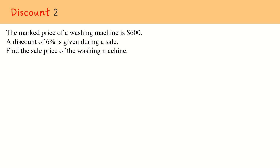For us to answer this question, we need to first know what percentage the sale price actually represents. Since the marked price is $600, it refers to the original and that is our base, which is 100%. As a discount of 6% is given, we take 100% minus 6%, which gives us 94%. So the sale price represents 94%, or in other words, 94% of the marked price gives us the sale price.